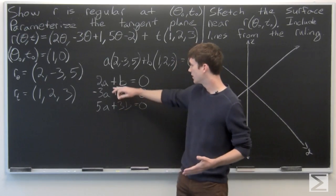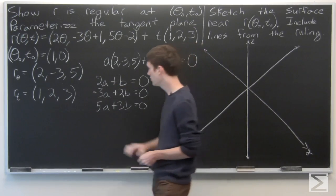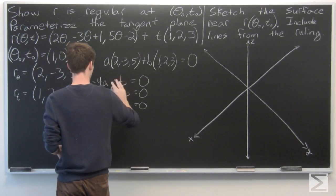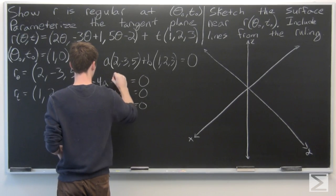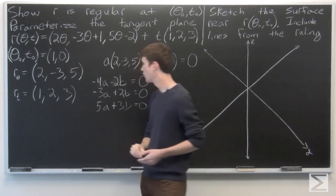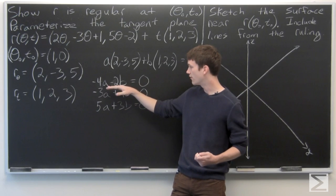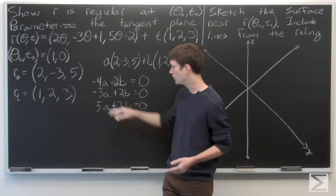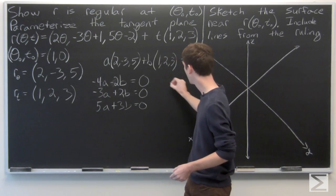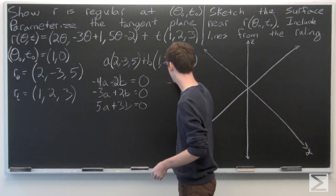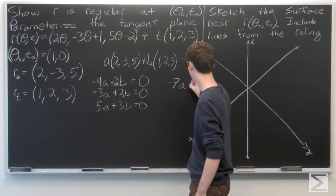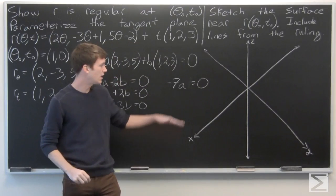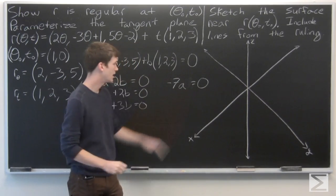Let's multiply the first equation by -2 to get -4a - 2b = 0. Adding this to the second equation, the b's cancel out and we get an equation just in terms of a. So we get -7a = 0, which means a = 0.